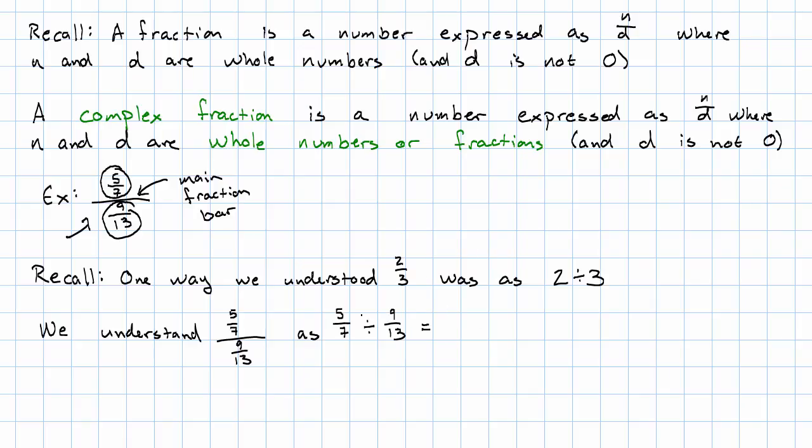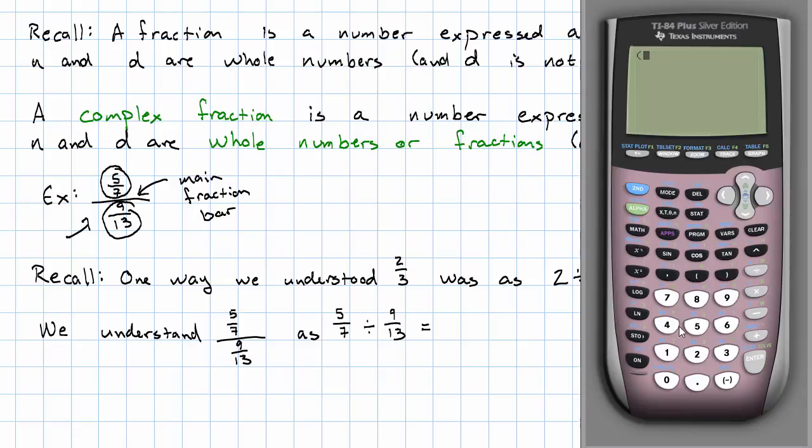And in fact, looking at that division problem, the normal way that I'm going to work it out is to use my calculator. So I have 5 sevenths divided by 9 thirteenths. Again, it's very important that each of my fractions be in parentheses. And I want my answer to be formatted as a fraction. So this fraction is equal to 65 sixty thirds.